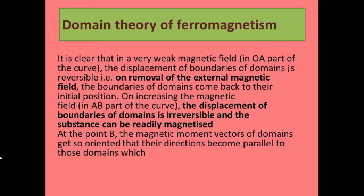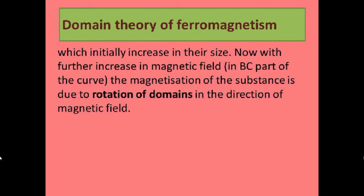In the OA part, the displacement of the boundaries of the domain is reversible — on removal of the external magnetic field, the boundaries return to their original position. In the AB part, the displacement of domain boundaries is irreversible, and the substance can be readily magnetized. At point B, the magnetic moment vectors of the domains get oriented parallel to those of the domains increasing in size.